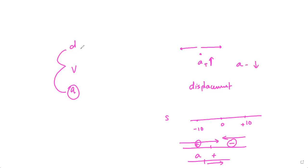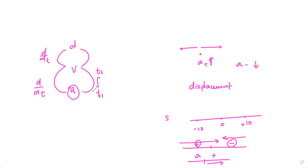The derivative of the displacement function gives velocity; the derivative of velocity gives acceleration. Conversely, the indefinite integral of acceleration gives velocity, and integrating with limits t1 to t2 gives the net change in velocity. Similarly, integrating the velocity function gives the displacement function, and with limits t1 to t2 you get the change in displacement over that time duration.